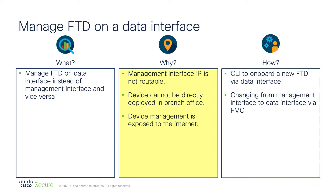Now, the FTD can be deployed directly in the branch office instead of first registering it in the head office and then shipping it off to the branch office. Also, the management interface is not exposed to the internet. A NAT statement is auto-added for the data interface which acts additionally as a management interface. This can be achieved by a CLI to onboard a new FTD via data interface. Changes from an existing management interface can be done to a data interface and vice versa.